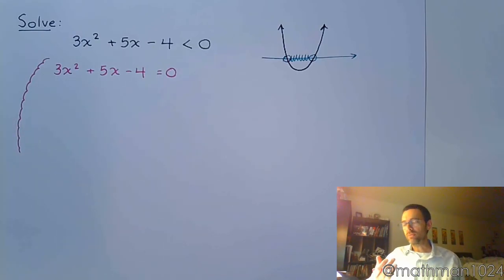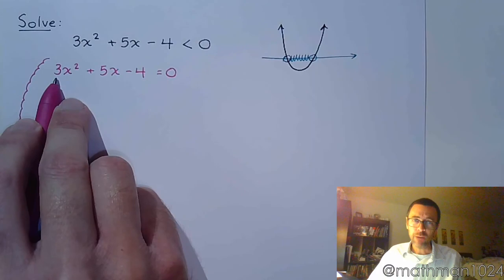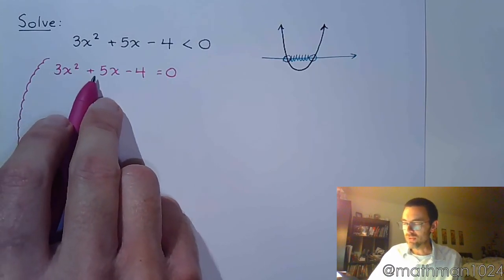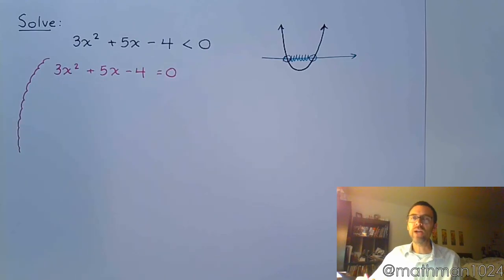So since this doesn't factor, and we know we can't use the square root property, we're left with either completing the square or the quadratic formula. To complete the square, you want this lead coefficient to be 1. It's not, but we can get it to be 1 by dividing everything by 3. But when I divide these guys by 3, I end up with fractions, so completing the square is not your best friend.